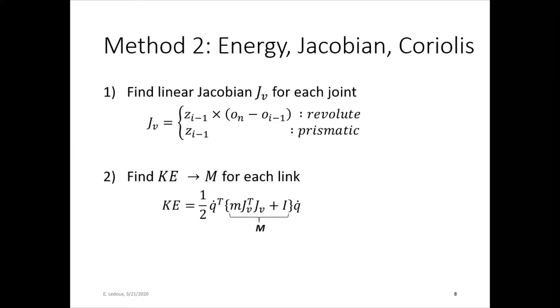So in more detail, find the linear Jacobian. This is the JV for each joint. It is Z_{i-1} × (O_n - O_{i-1}) for revolute joints, where Z is the axis of rotation and O is the origin. And then just Z_{i-1} for prismatic joints. Or in that case, Z would be the direction of motion.